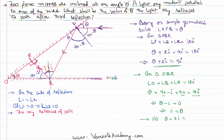Substituting i equals theta into our first equation: theta plus 2 theta equals 90, so 3 theta equals 90, giving theta equals 30 degrees. Therefore, for the incident light ray parallel to the first mirror to retrace its path after the third reflection, the two mirrors must be inclined at an angle of 30 degrees. Thank you for watching — keep coming back for more video lessons.